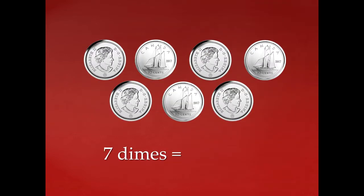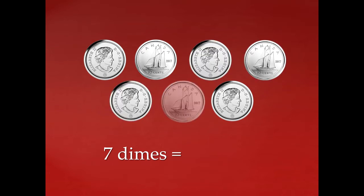So if we have seven dimes, let's count and see how many cents that would be: ten, twenty, thirty, forty, fifty, sixty, seventy. Did you notice that when we counted the dimes we counted them by ten? That's because dimes are worth ten cents, and seven dimes is worth seventy cents.